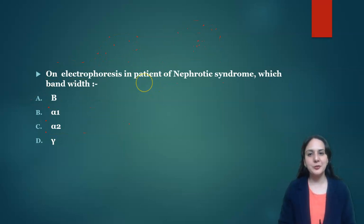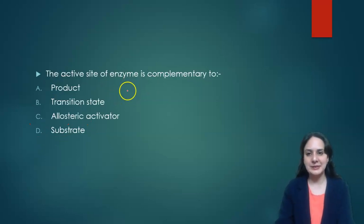The next question was on electrophoresis: in patient with nephrotic syndrome which bandwidth will increase? We know what happens in nephrotic syndrome - albumin is excreted out, so albumin level decreases and to compensate that our body produces more alpha-2 globulin. So that's why alpha-2 bandwidth will increase in case of nephrotic syndrome when seen on electrophoresis.